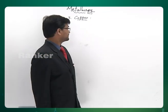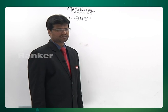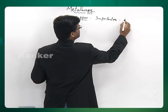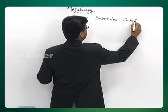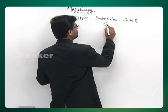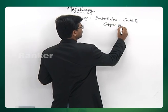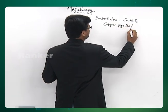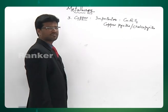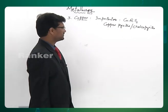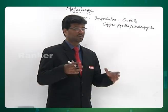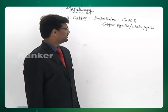The next metal we are going to discuss is copper. Extraction of copper — the important ore of copper is CuFeS₂. This is the chemical composition; the name is copper pyrites, also called as chalcopyrite. This consists of cuprous sulphide and ferrous sulphide. You can realize that the ratio of copper and iron is one to one, so you have lots of iron as an impurity in the ore.